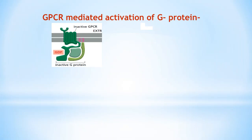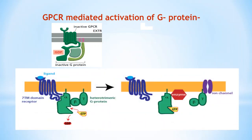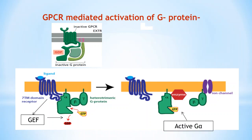When an extracellular ligand binds to a GPCR, the receptor undergoes a conformational change that allows it to activate the G protein. Activated GPCRs act as guanine nucleotide exchange factors (GEFs), inducing the alpha subunit to release its bound GDP. This removal of GDP leads to the automatic binding of GTP (guanosine triphosphate) to the alpha subunit, due to the high concentration of GTP in the cytosol. This exchange results in activation of the G alpha subunit and causes a large conformational change in the G protein.